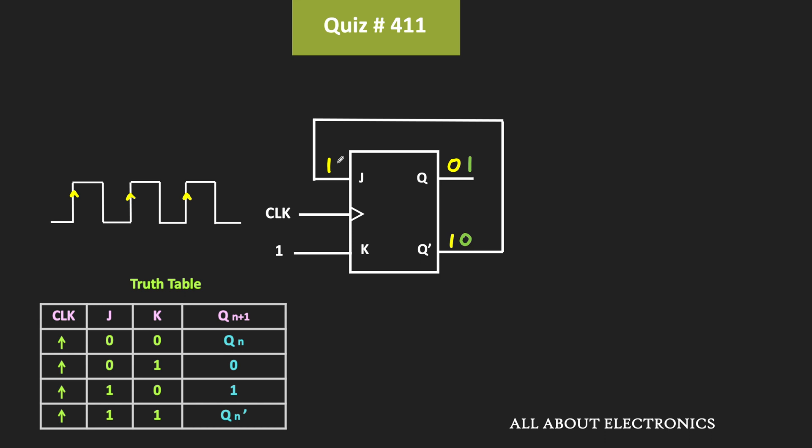And the same 0 will also appear over here. So now, at the next rising edge if you see, then this J is 0, while the K is equal to 1. And therefore, the flip-flop will get reset to 0. That means now, this Q will become 0, while the Q' will become 1.